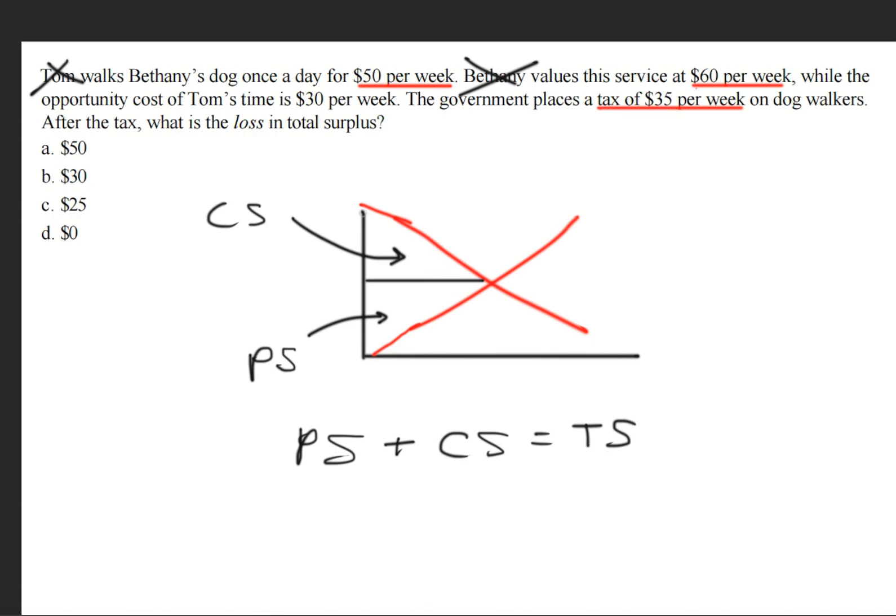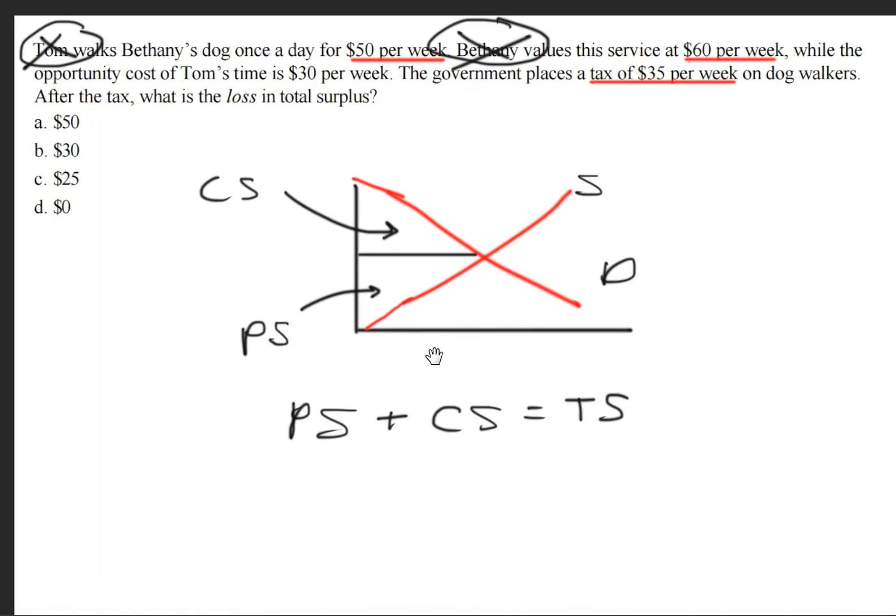Now, the total surplus includes Tom and Bethany because they are the supplier and the people who are demanding. This area right here, which is the total surplus, is also going to be the deadweight loss because this right here, in essence, is the tax. Because the tax eliminated the two of them from ever wanting to participate in the market. So therefore, the answer to this question here is to simply find the total surplus, which will equate to the deadweight loss.